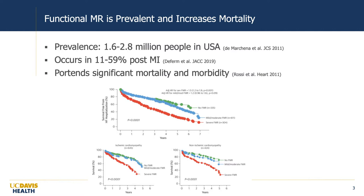There's been significant interest in developing transcatheter mitral annuloplasty techniques since functional mitral regurgitation is prevalent and increases mortality in patients with systolic heart failure. The significant prevalence numbers on this slide show that patients with ischemic cardiomyopathy post-myocardial infarction have up to a 59% prevalence of functional MR. The curves illustrate that patients with severe functional MR have higher rates of heart failure hospitalization and mortality than those with mild to moderate or no functional MR. Unquestionably, this is an important clinical subset and functional MR is bad.